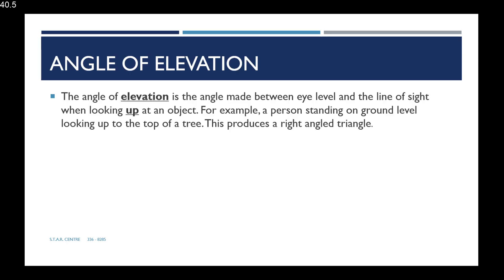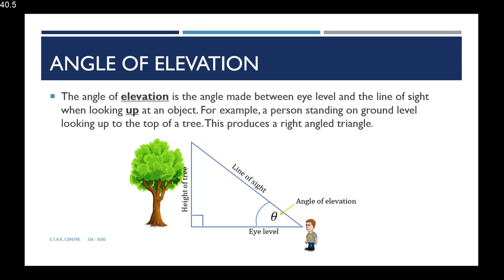The first concept we will look at is angles of elevation. The angle of elevation is the angle made between the eye level and the line of sight when looking up at an object. For example, a person standing on ground level looking up to the top of a tree produces a right angle triangle. The angle created between the eye level and the line of sight looking up at the tree is the angle of elevation, theta.